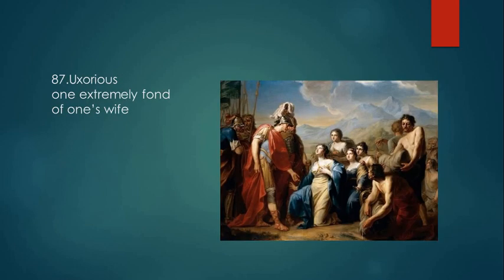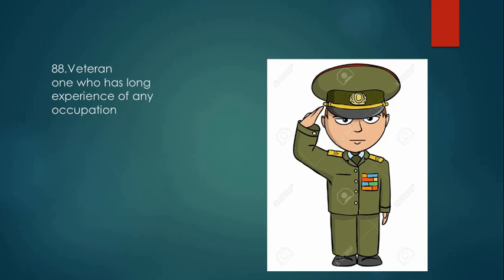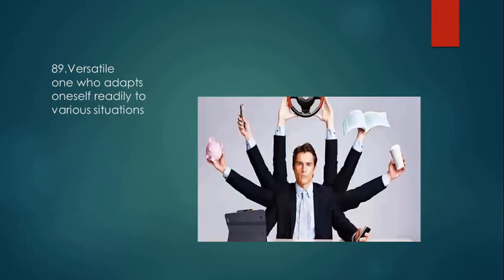Uxorious means one who is extremely fond of his wife — if someone loves their wife too much, they are called uxorious. Veteran is one who has long experience in an occupation — generally veterans refers to military people who have served their country. Versatile is one who adapts himself to any situation — a person who performs very well in any kind of situation and adapts immediately and fast.